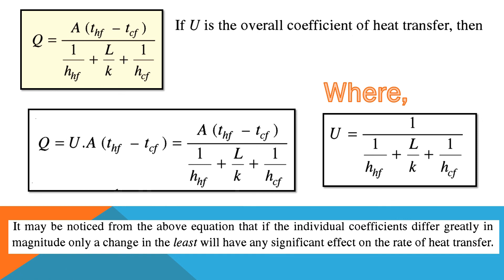So Q equals U·A·ΔT is the equation we use while dealing with the combined problem of conduction and convection. Thank you friends for watching this video. I hope this content is helpful to you. If you would like to watch more technical videos like this, please subscribe to our channel and share it with your friends.